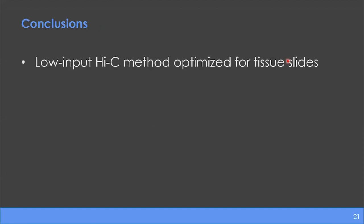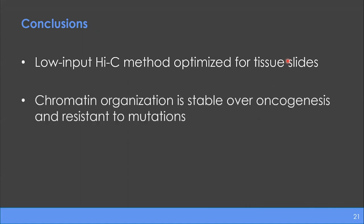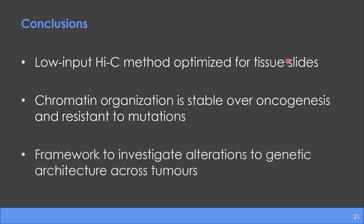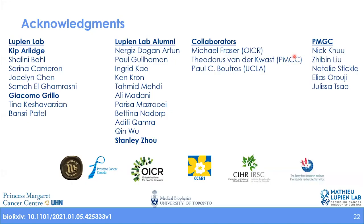To conclude: we've been able to optimize the low-input Hi-C method for tissue slides so that we can work with primary tissue samples. The chromatin organization is stable over oncogenesis and resistant to structural variants. We've developed a framework to investigate the effect of alterations to the genetic architecture in primary tumors in both normal and disease settings. We produced a preprint of this and really appreciate any feedback. I'll take any questions.